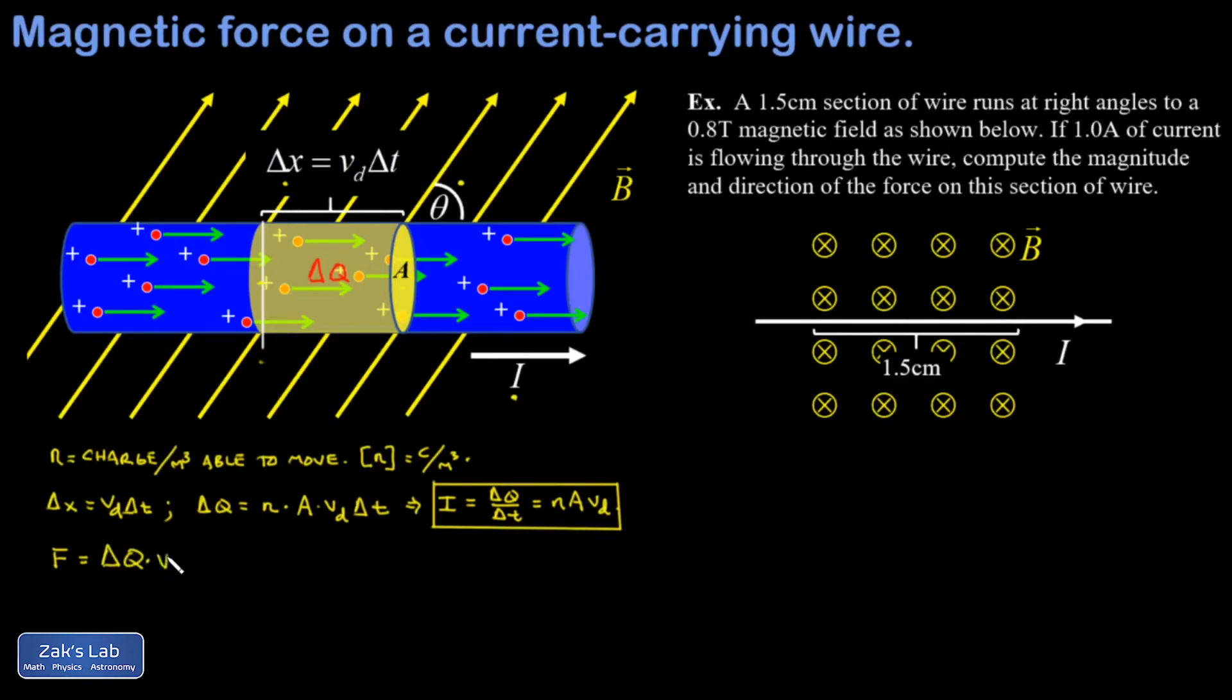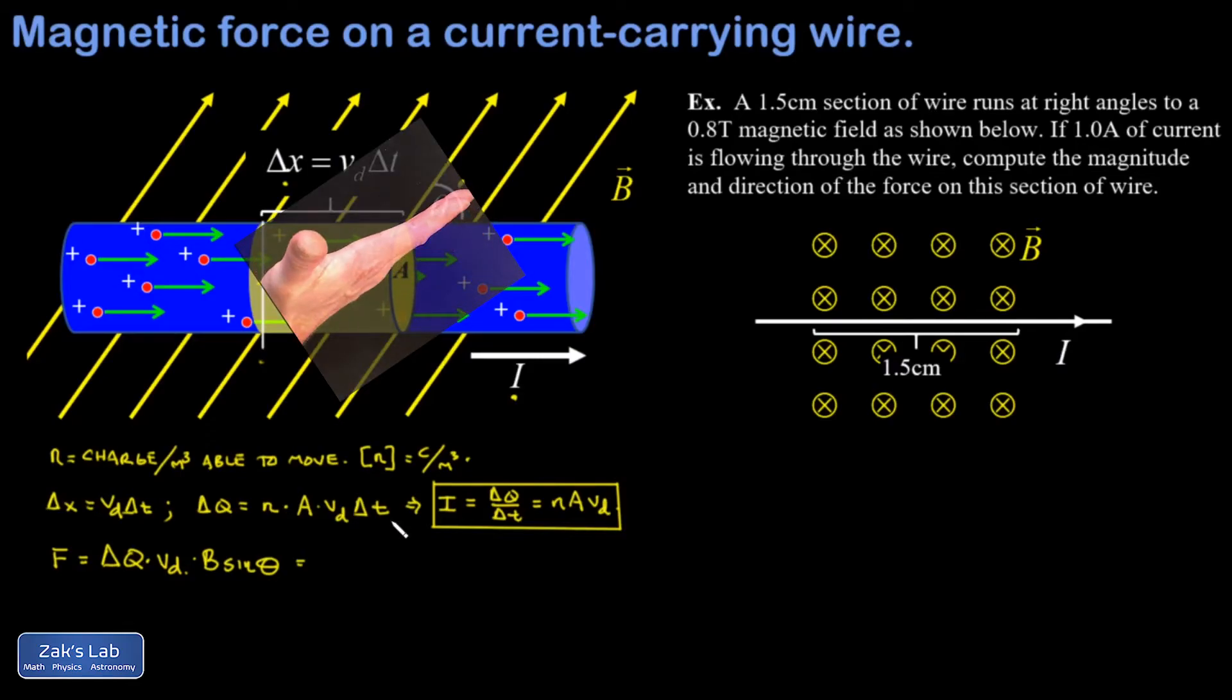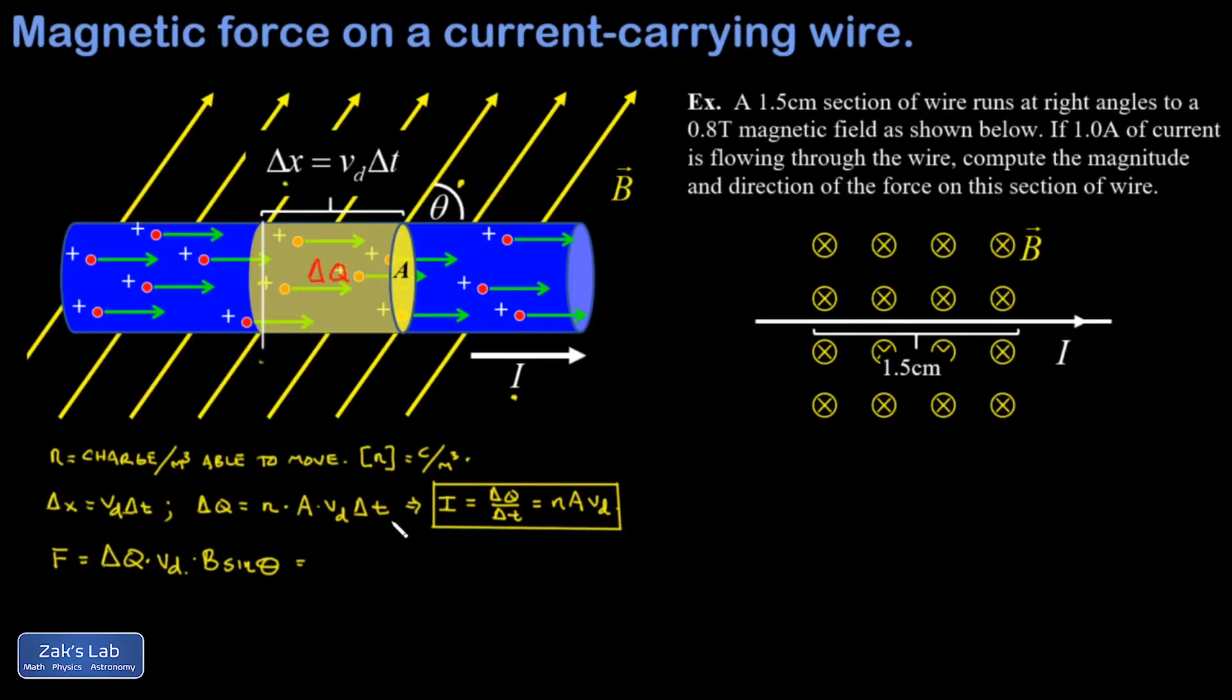times the magnetic field magnitude times the sine of the angle between the velocity and the magnetic field, which was labeled as theta in the diagram. And the direction of this force is given by a right-hand rule, where we point our fingers in the direction of the velocity, sweep out to the direction of the magnetic field, and our thumb points in the direction of the force. So in this case, that's out of the page.